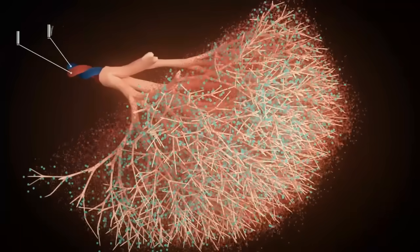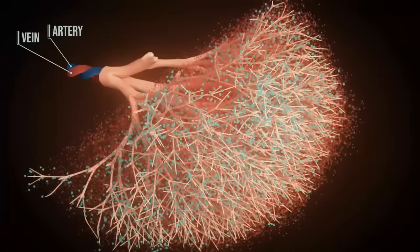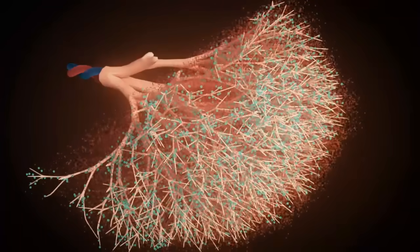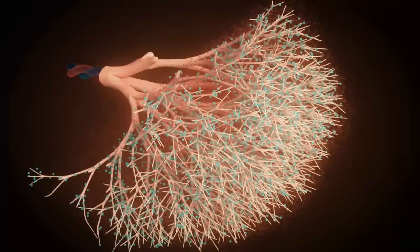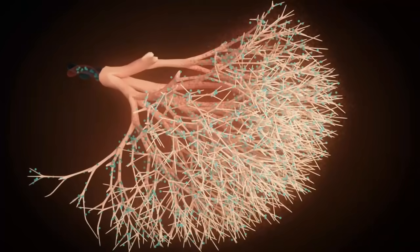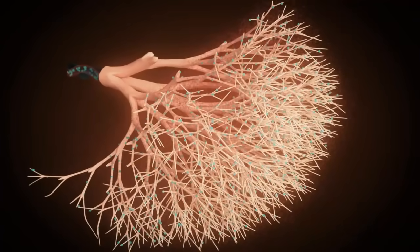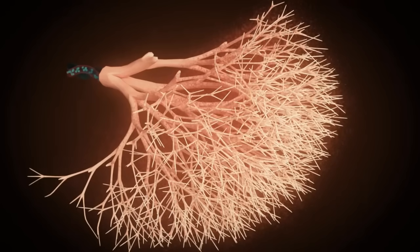The chorionic villi extract oxygen and necessary nutrients from the mother's blood. Nutrients include carbohydrates, amino acids, fats, vitamins, and iron. Oxygen and nutrients are then transported to the fetus via the veins with the help of the umbilical cord.